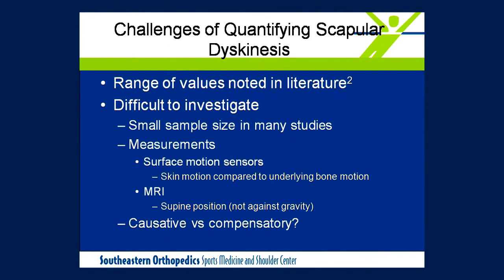In the literature, the values for various angles of the scapula — either during elevation or in a static position — can be highly variable. It's difficult to measure these angles in studies mainly because many use electromagnetic sensors placed on the skin, so there's a certain degree of skin artifact that creates error. Additionally, sometimes MRIs are used to measure scapular position, but these are commonly done in a supine position so the effect of gravity doesn't come into play. And sometimes when presented with a patient who has both shoulder pain and scapular dyskinesis, we don't know which caused the other — sort of a chicken-and-egg effect.